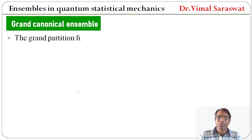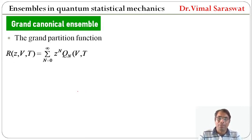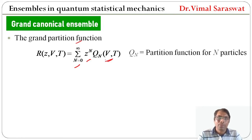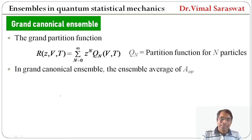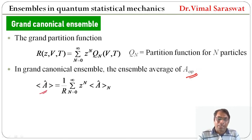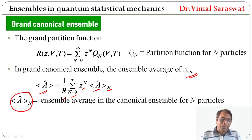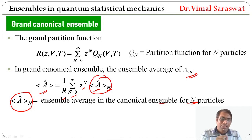Now, grand canonical ensemble. The grand partition function is given by r equal to sigma from N equals zero to infinity of z^N times Q_N(V,T), where Q_N is the partition function for N particles. In the grand canonical ensemble, the ensemble average of operator A is given by ensemble average of A equal to 1 over r, times sigma from N equals zero to infinity of z^N times the ensemble average of A over N, where the ensemble average of A over N is the ensemble average in the canonical ensemble for N particles.